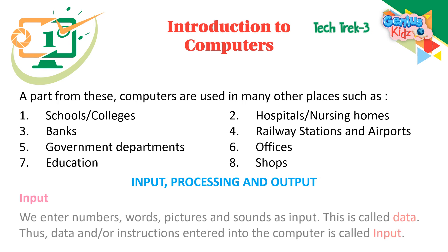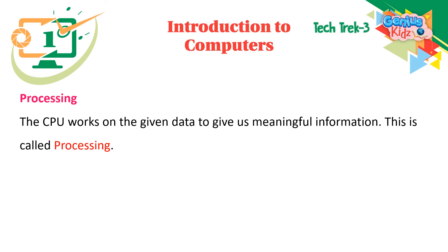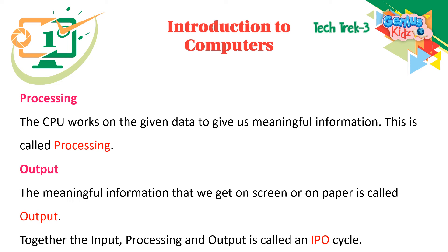Input, Processing, and Output: We enter numbers, words, pictures, and sounds as input — this is called data. Data and instructions entered into the computer are called input. Processing: The CPU works on the given data to give us meaningful information — this is called processing. Output: The meaningful information that we get on screen or on paper is called output. Together, input, processing, and output is called an IPO cycle.